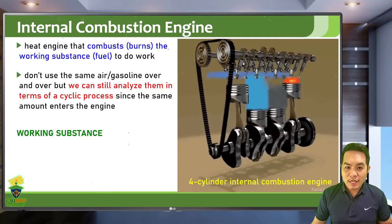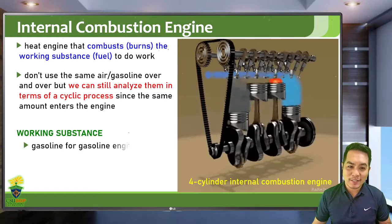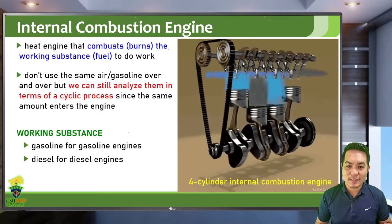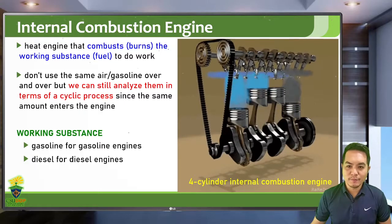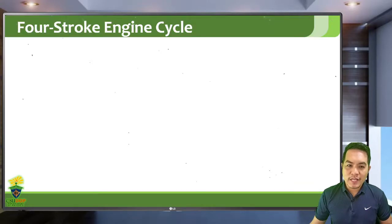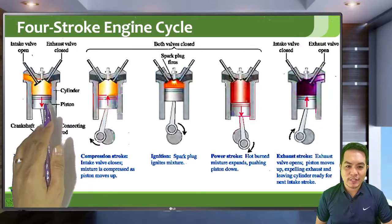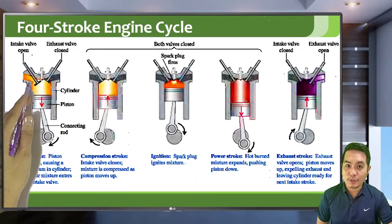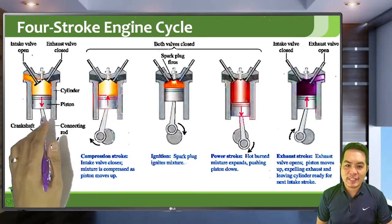An internal combustion engine is named after its working substance. For gasoline engines the working substance is gasoline; for diesel engines the working substance is diesel. This is a diagram of a four-stroke engine cycle. The first stroke is the intake stroke, in which the intake valve is open and a mixture of fuel and air enters the piston.